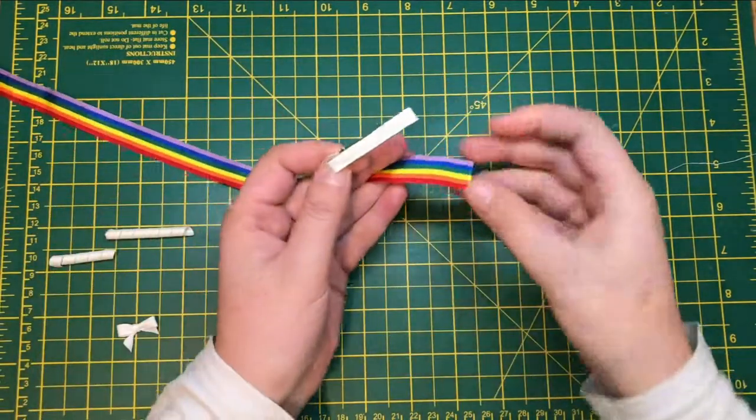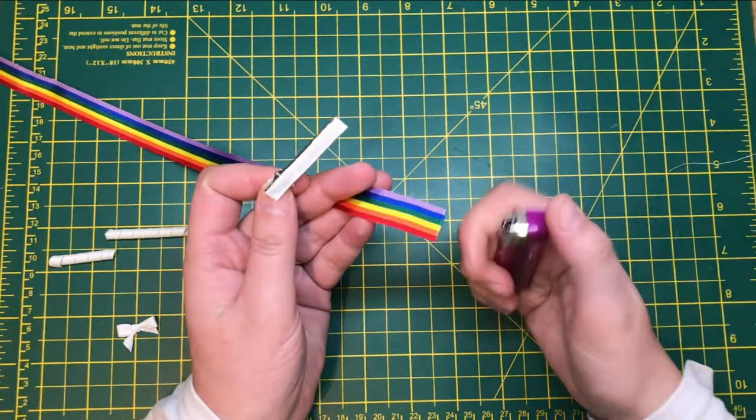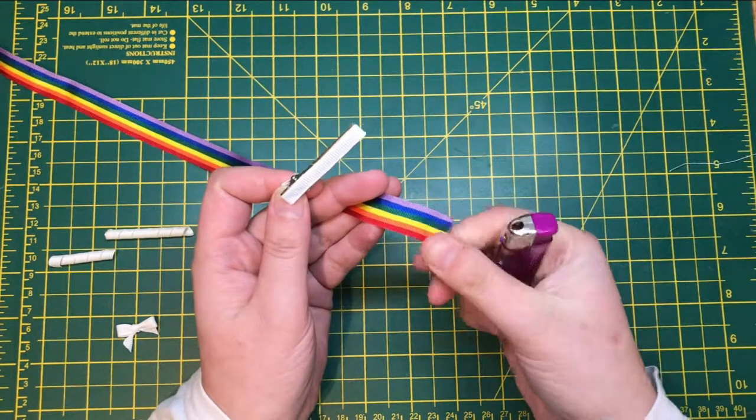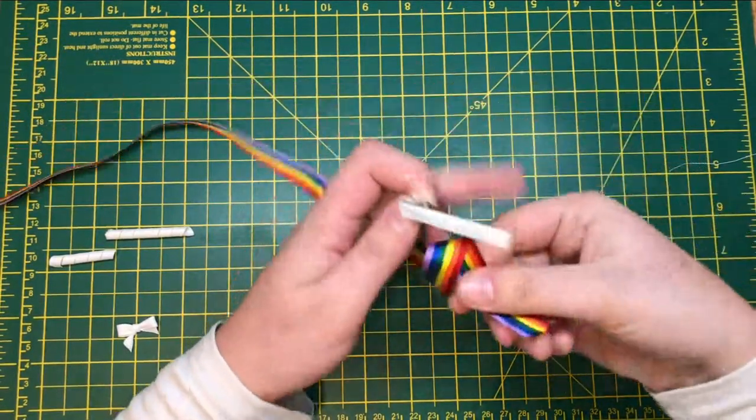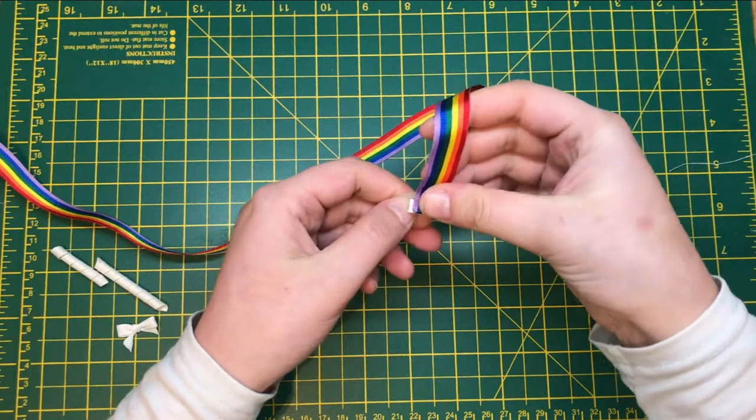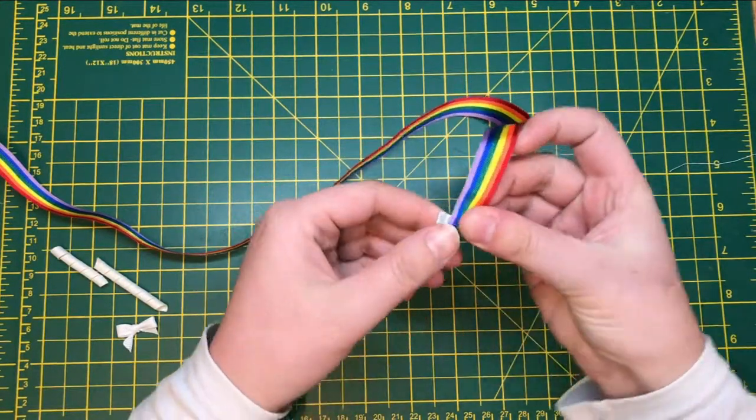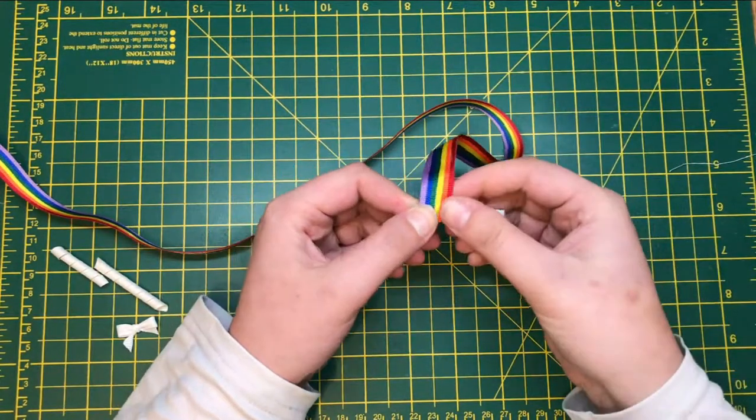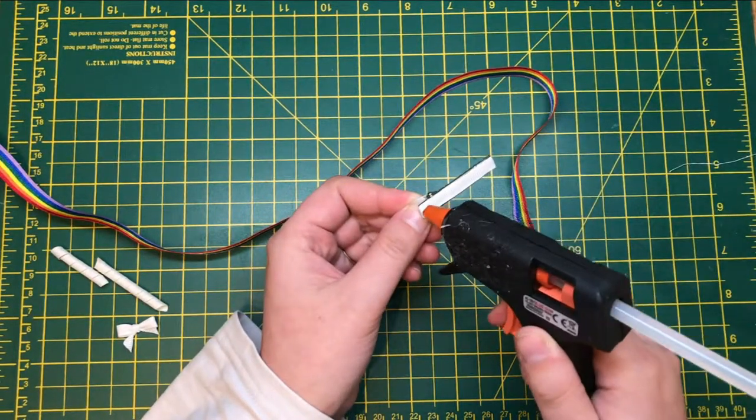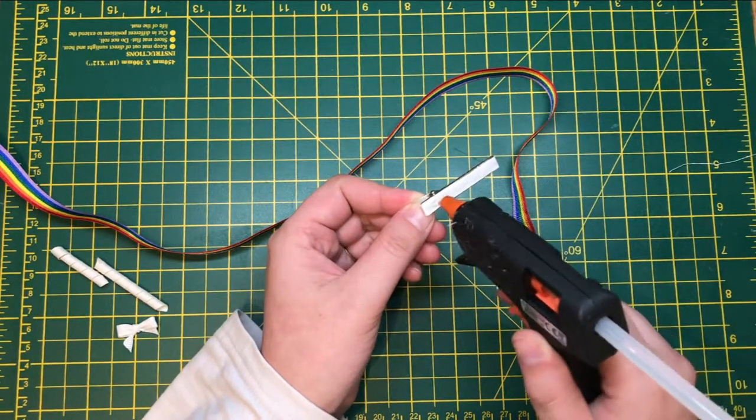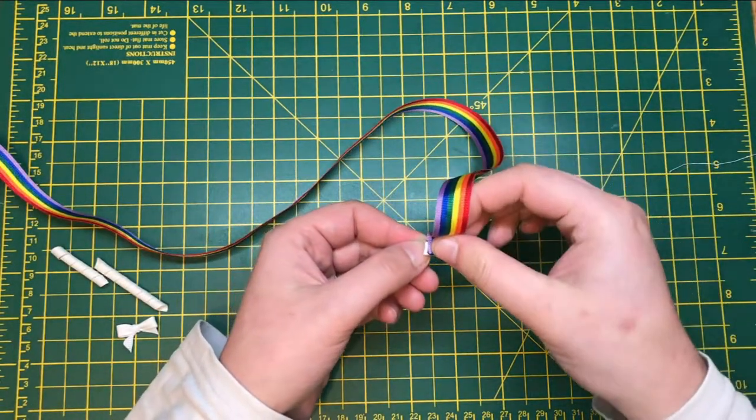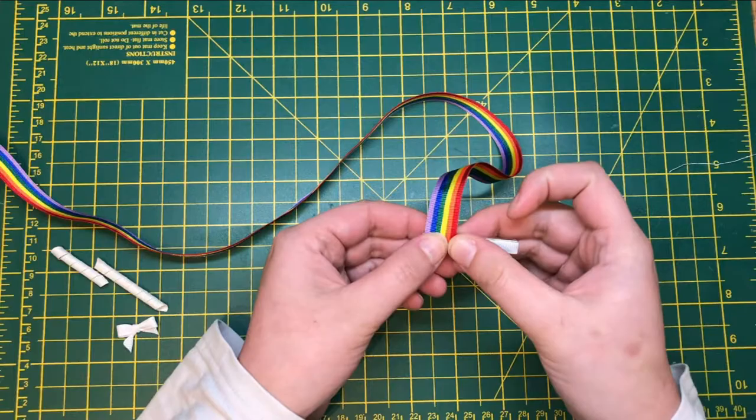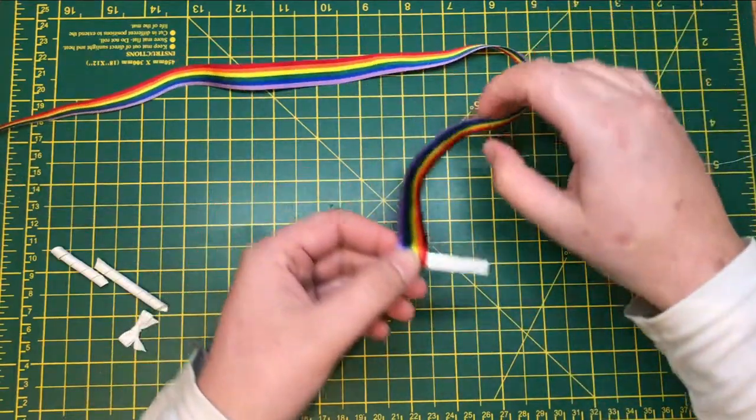So first we're going to get your rainbow ribbon and just seal the edge like so. That is going to be glued where you open up the clip, so literally just on that edge. We'll just pop a bit of glue there, place that rainbow ribbon there. Now this is where you want to play about a bit.